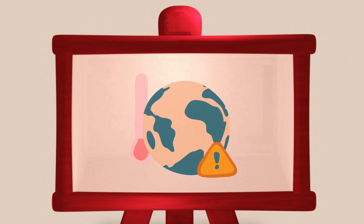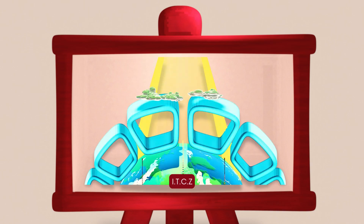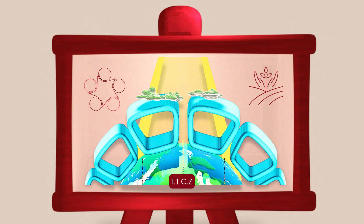So now you know the ITCZ is more than just an area on the map. It is a moving weather engine that brings life-giving rain to countries near the equator and helps power the global circulation system.